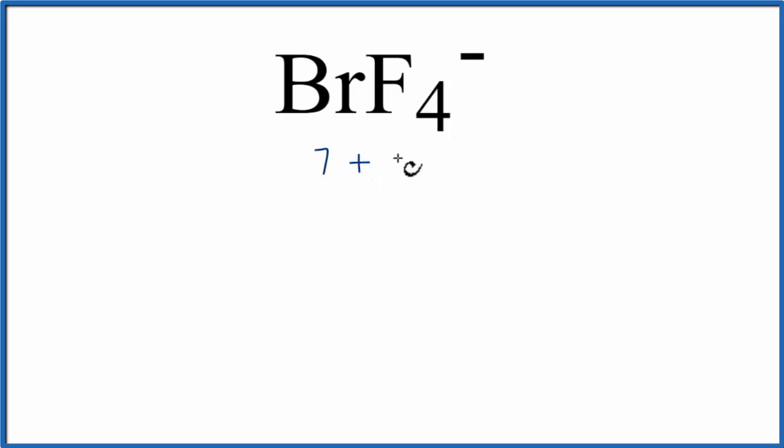Fluorine is in the same group with 7 valence electrons, but we have 4 fluorines, plus the minus charge means we have an extra valence electron, giving us a total of 36 valence electrons for the BrF4- Lewis structure.